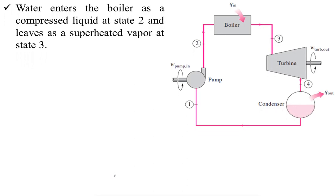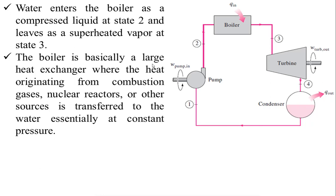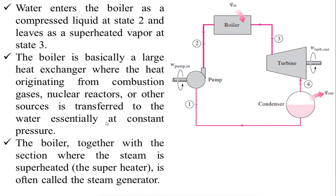Water enters the boiler as a compressed liquid at state point two and leaves as superheated vapor at state point three. The boiler is basically a large heat exchanger where heat originating from combustion gases, nuclear reactor, or other sources is transferred to the water at essentially constant pressure — either by burning coal, fuel, or fossil fuels, or by nuclear fusion. The boiler also includes a superheater to increase the temperature of dry saturated steam, and it is also called a steam generator.